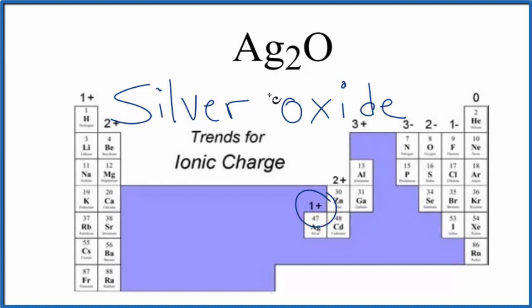Since it has the 1 plus charge you could put a 1 in roman numerals since it's a transition metal. And that actually is the IUPAC name for Ag2O. However most of the time you see it written as just silver oxide.